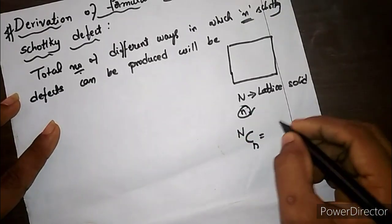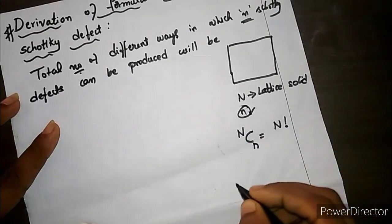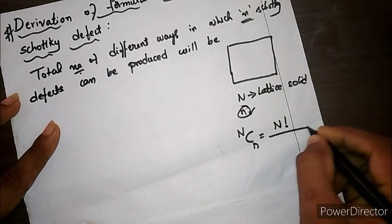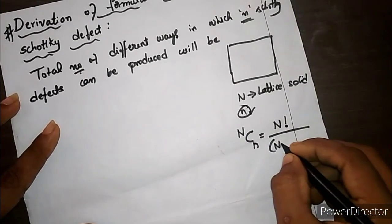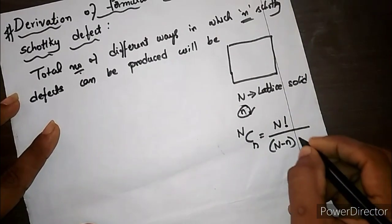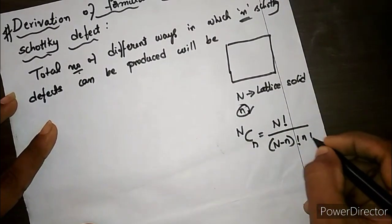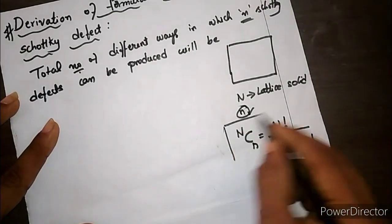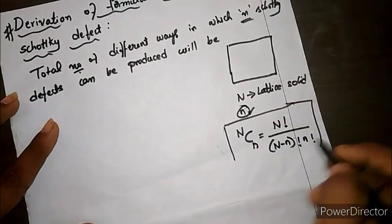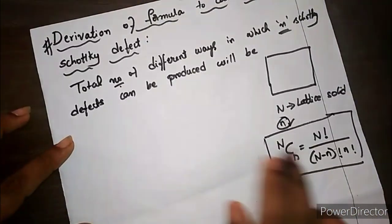The combination formula gives N factorial divided by (N minus n) factorial times n factorial, and I represent this as W.